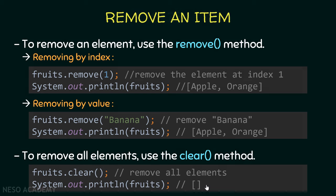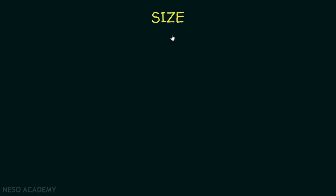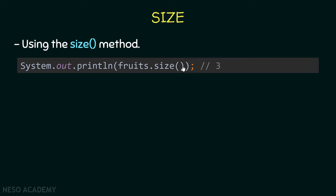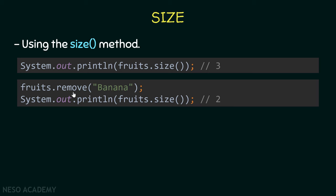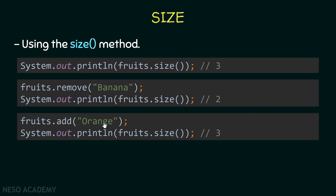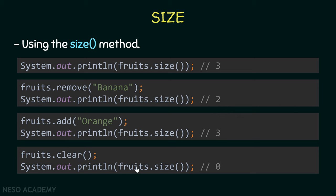Now let's talk about the size of the ArrayList. We use the size() method, which returns the number of elements currently inside it. If our 'fruits' ArrayList has three elements, fruits.size() prints 3. After removing 'banana' it prints 2, after adding an element it prints 3 again, and after calling clear() it prints 0.